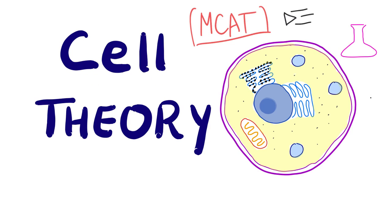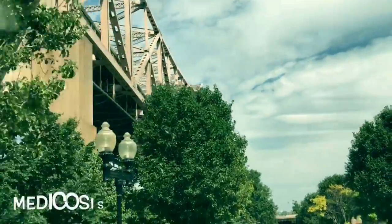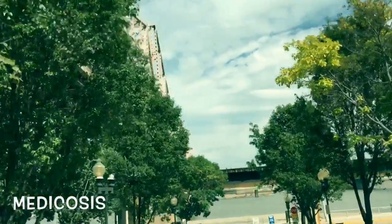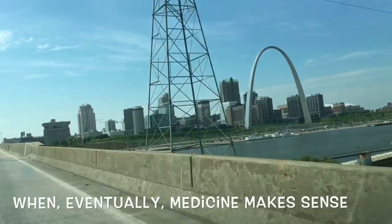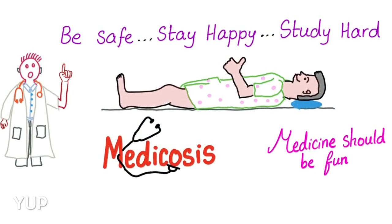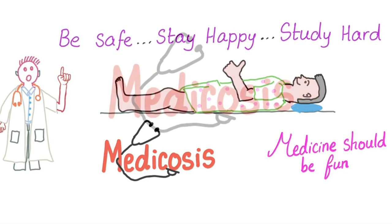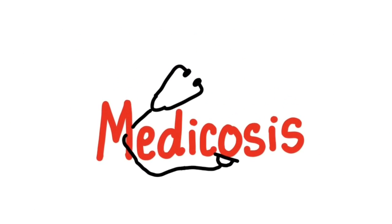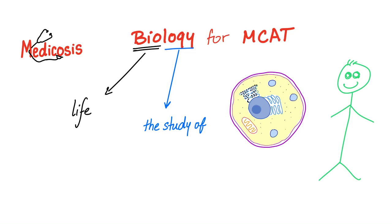Let's get started with cell theory. The science of etymology deals with the origin and history of words. What does biology mean? Bio means life. Ology means the study of — from Logos or Logia.